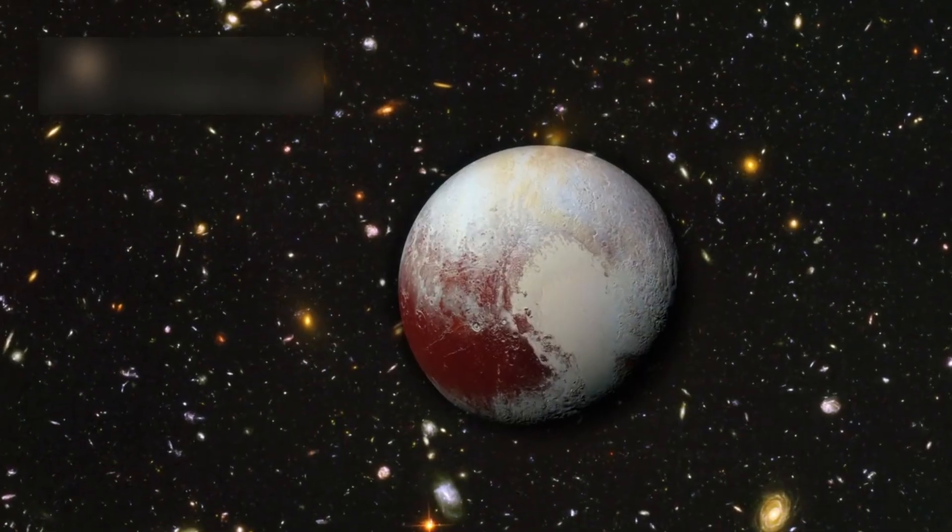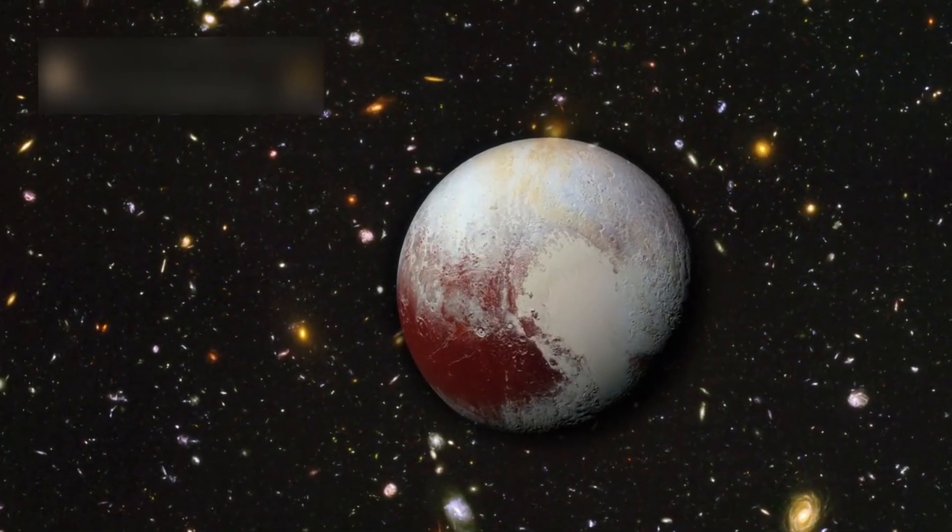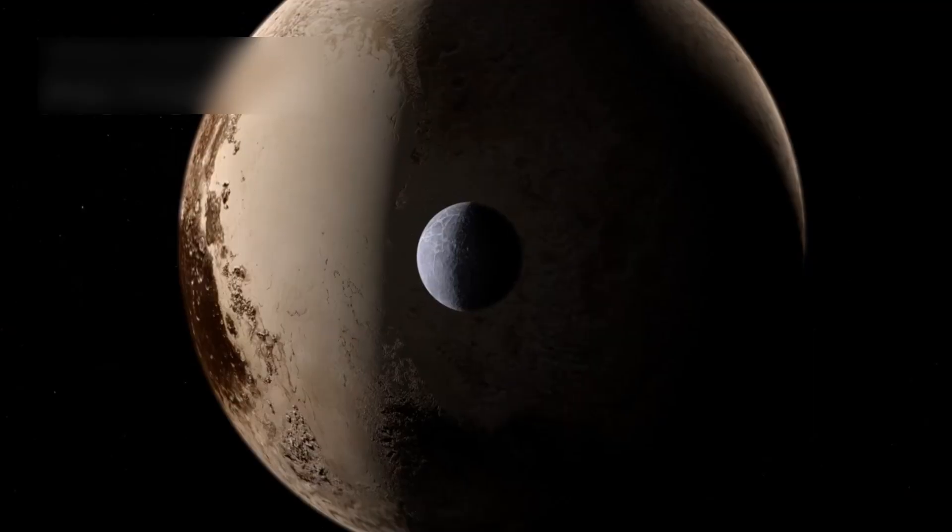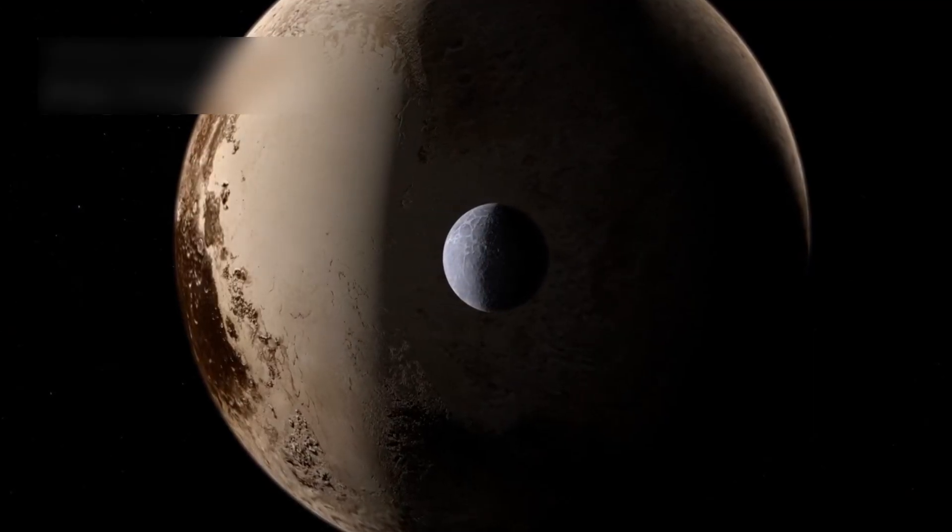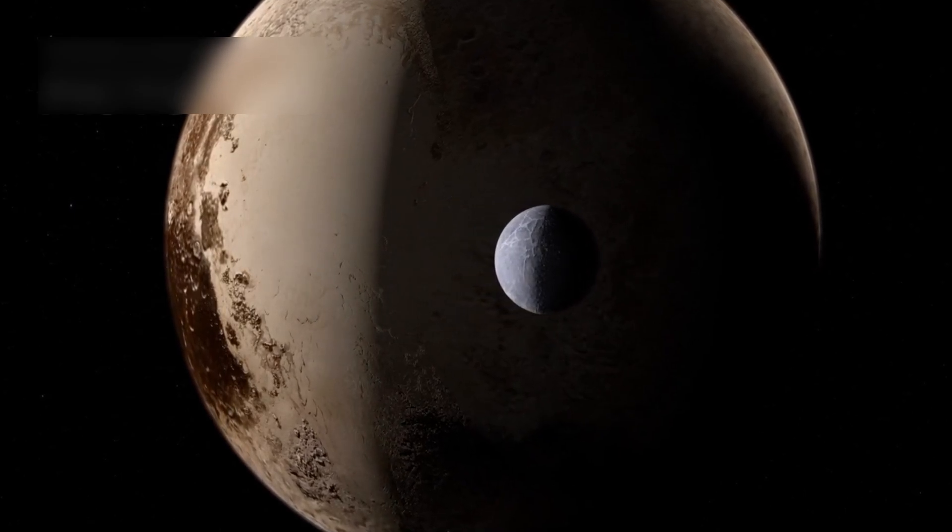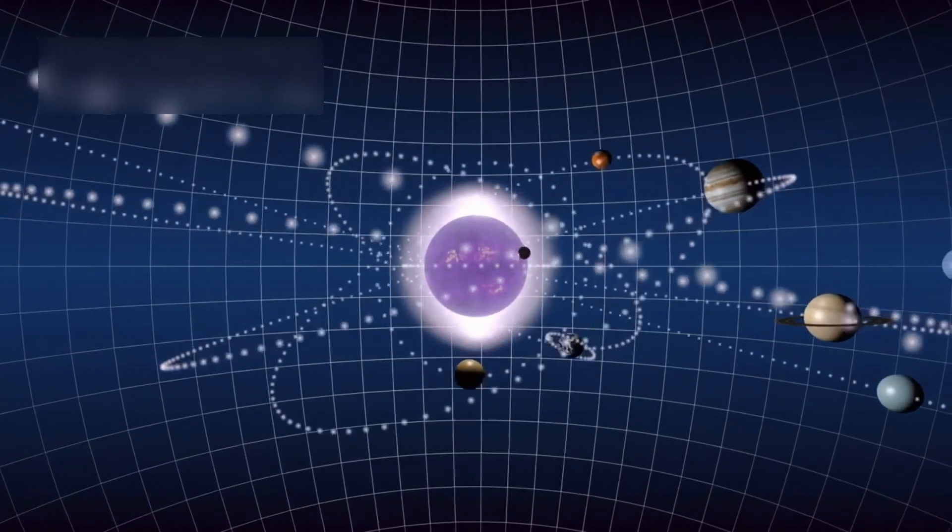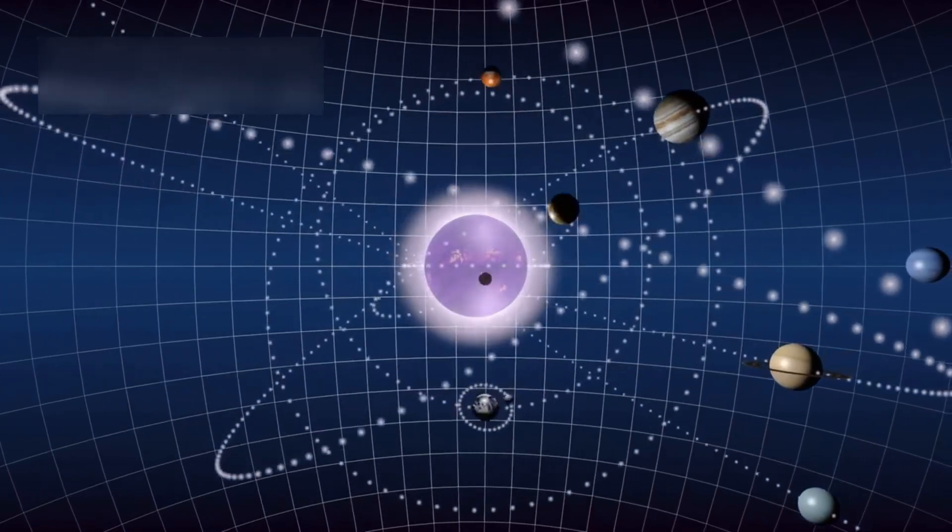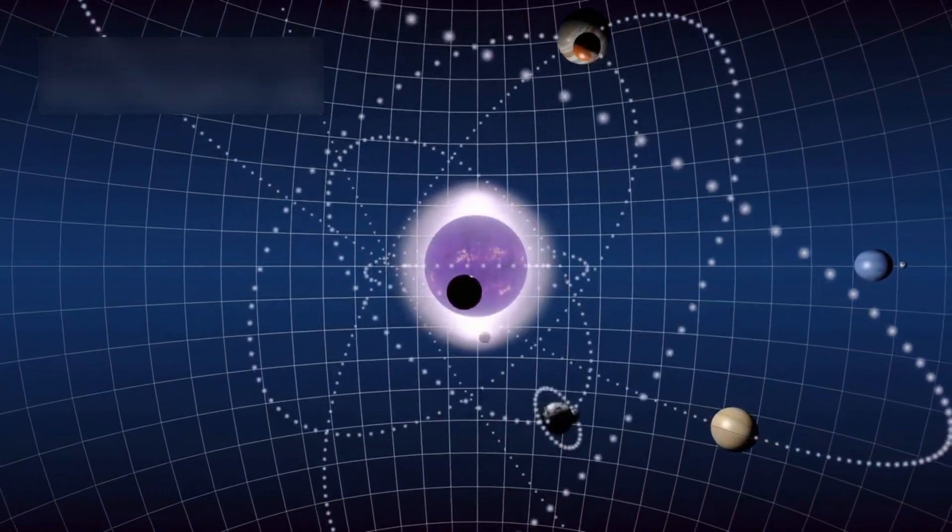Neil deGrasse Tyson has spoken many times about the beauty of Pluto's orbit. He often points out that even though it looks strange, it shows how gravity can create stability in motion. In his view, Pluto is not a failed planet, but rather an important piece in understanding how the solar system works.